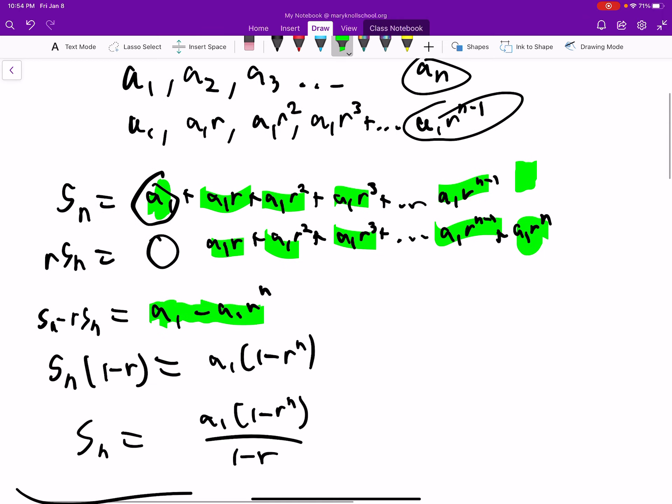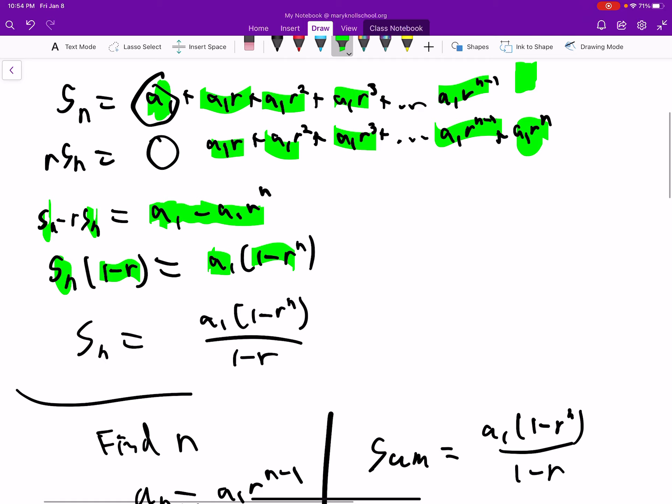So then we just factor out an sn, and it's right there. What we're left with is a1 times 1 minus r, and then we're factoring out an a1. What we're left with is 1 minus r to the n. And then we get the summation formula, it's right here.